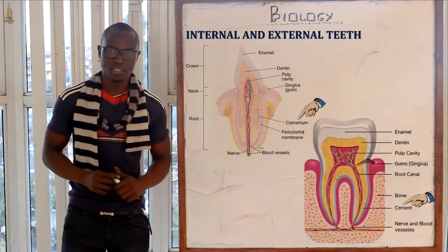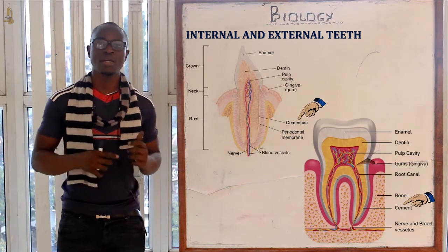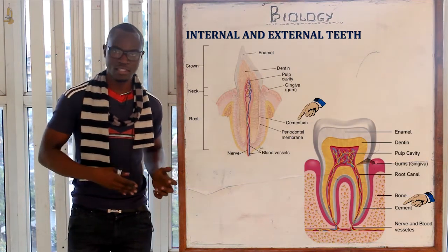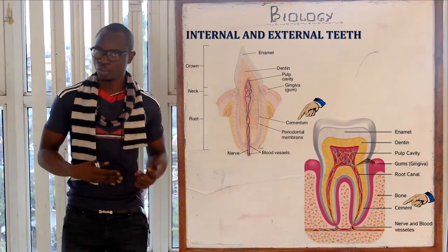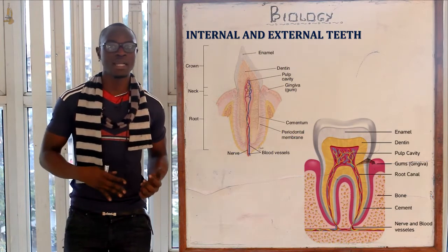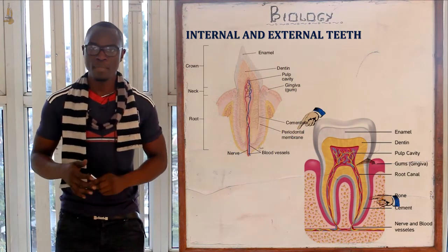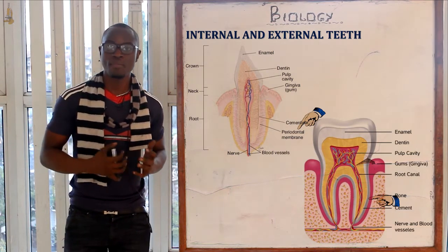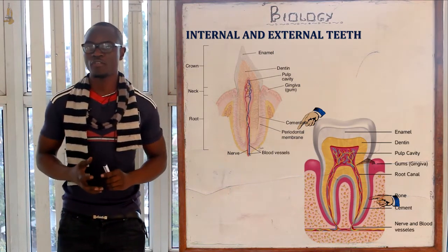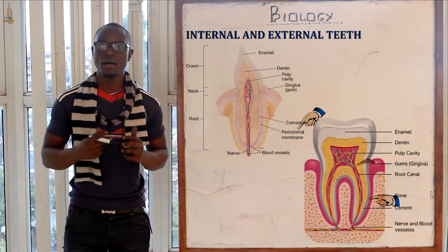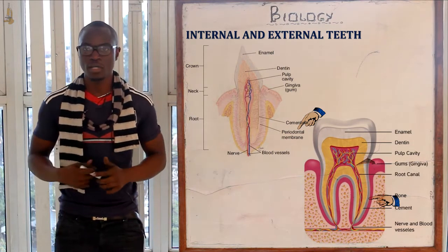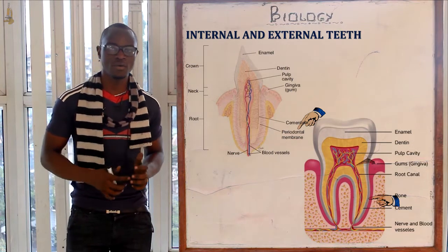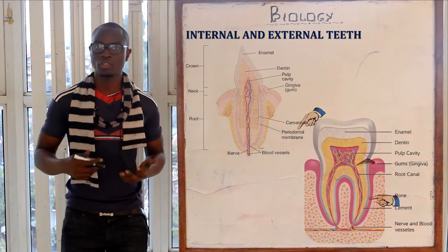The cement is made up of spongy calcareous material that fixes the teeth inside the jawbone. Finally, the periodontal membrane is a tough membrane made up of collagen fibers situated between the cement and the jawbone. Its function is to hold the teeth securely in the jawbone.